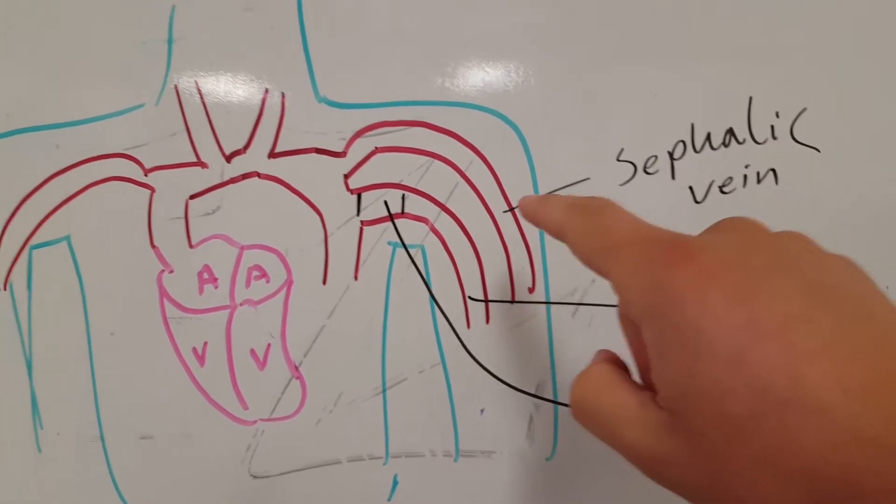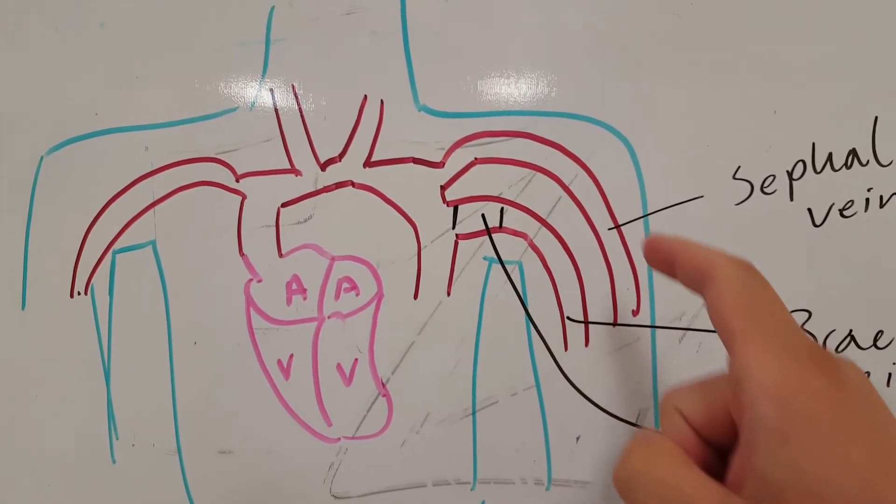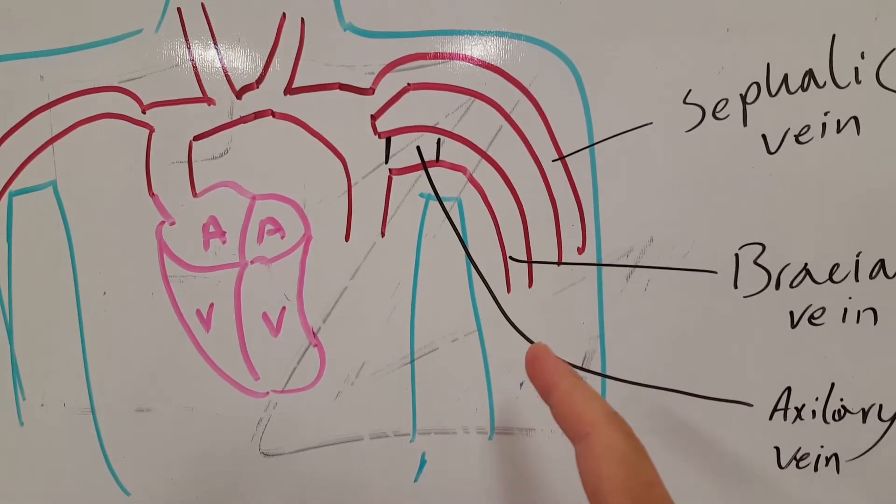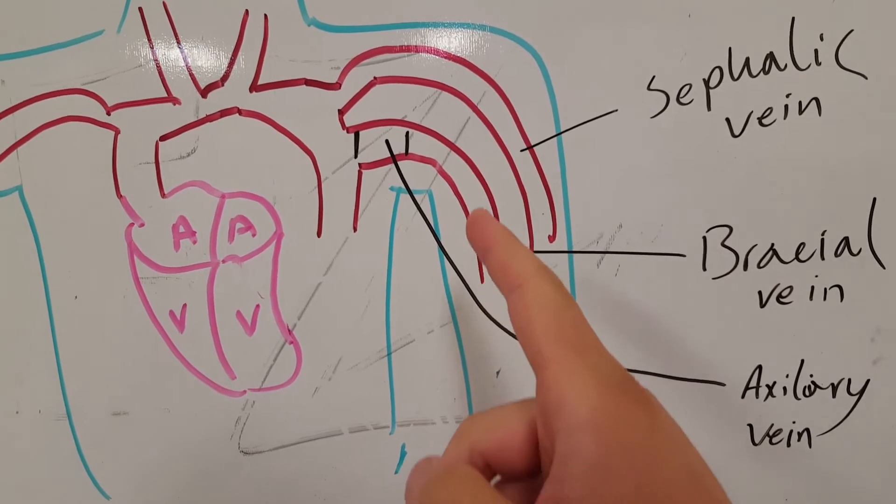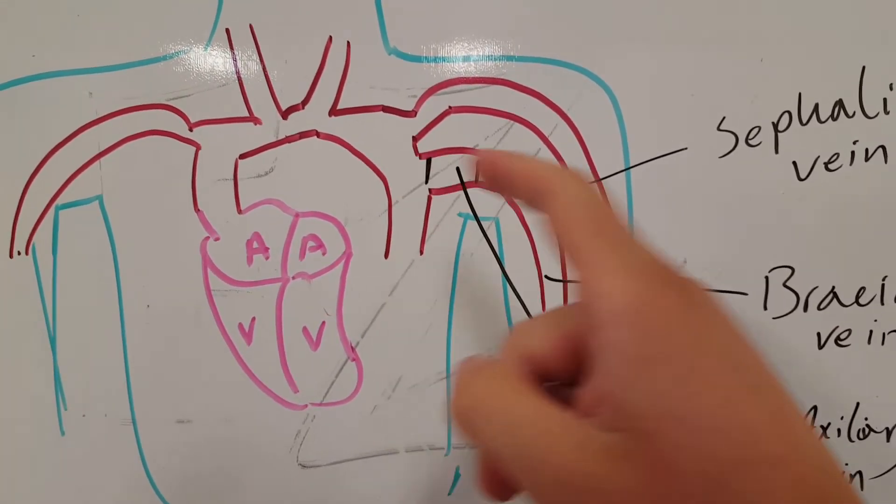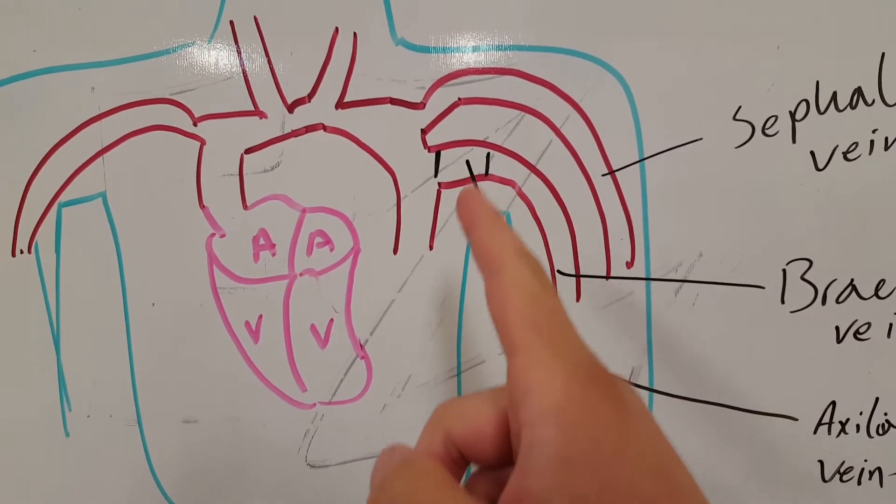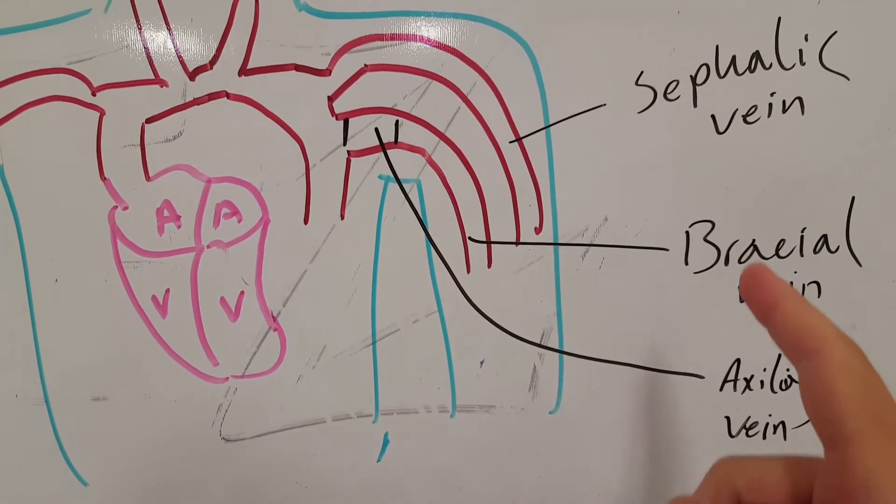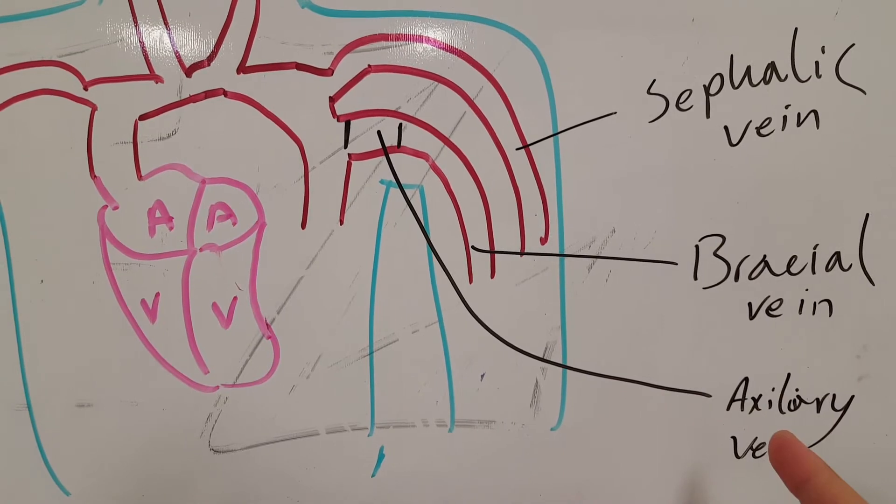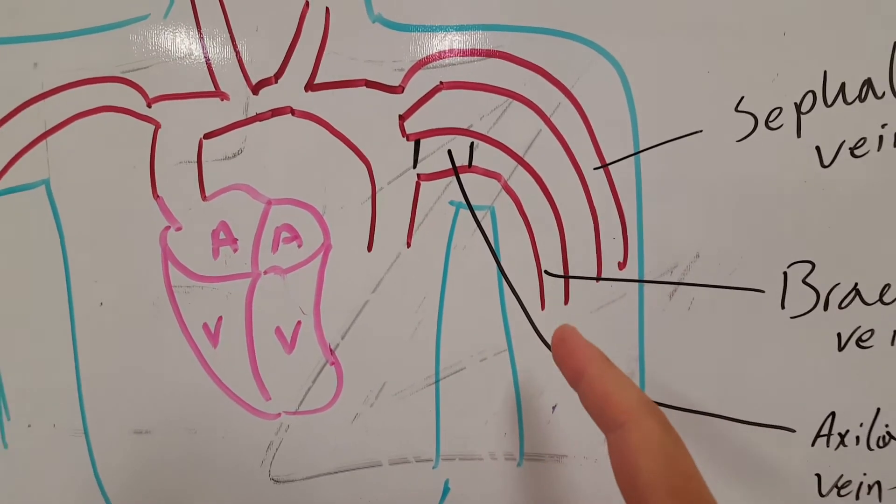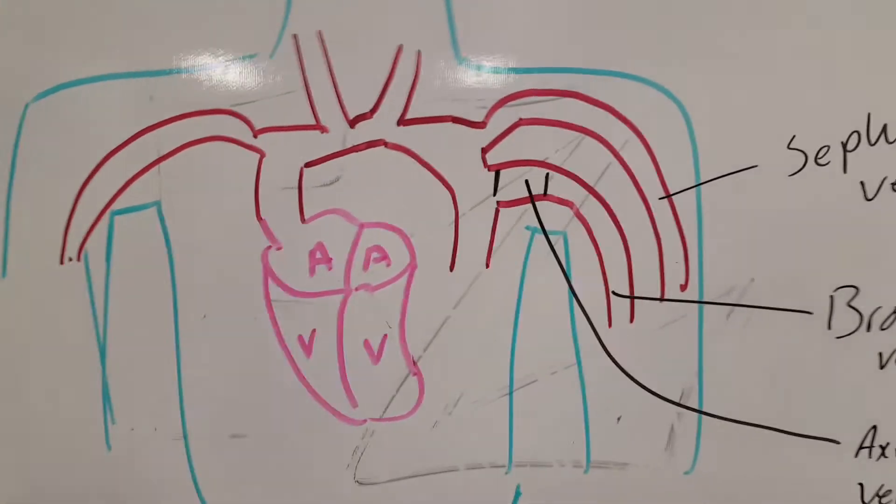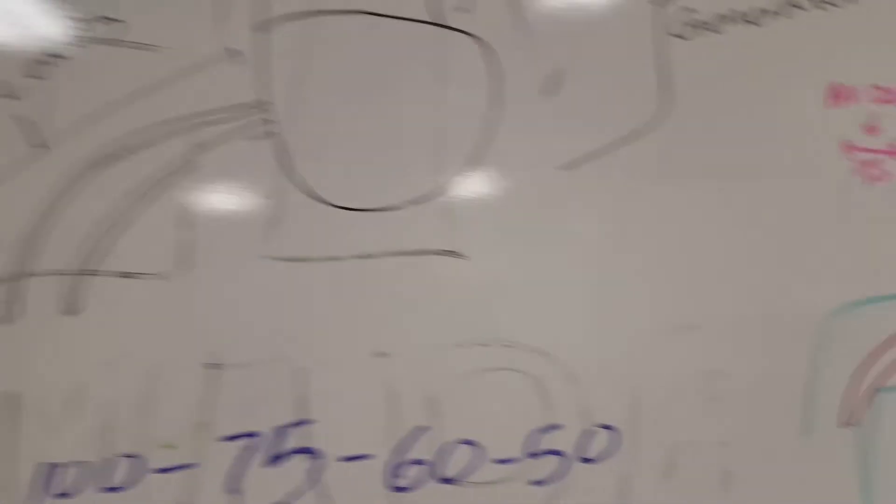So you have your cephalic vein that goes up here, right? And then below that you have your brachial vein - brachial for your arm. Now as your brachial vein goes more towards the torso into the core of the body, once it gets to this range right here and it moves away from the arm, it's called the axillary vein. So the brachial vein is the same vein as the axillary vein - just depending on where it's at depends on what it's called, depends on its name.